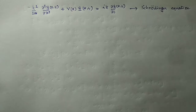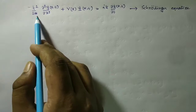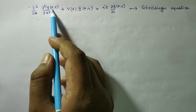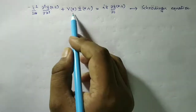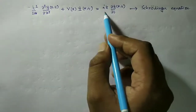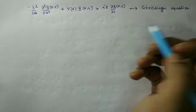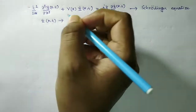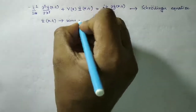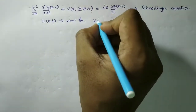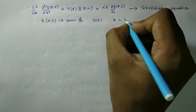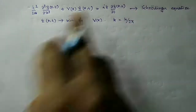The Schrödinger equation plays the central role in quantum mechanics. The equation is: −ℏ²/2m · (∂²Ψ(x,t)/∂x²) + V(x)Ψ(x,t) = iℏ · (∂Ψ(x,t)/∂t), where Ψ(x,t) is the wave function, V(x) is the potential energy of the system, ℏ is Planck's constant divided by 2π, and i is the square root of −1.